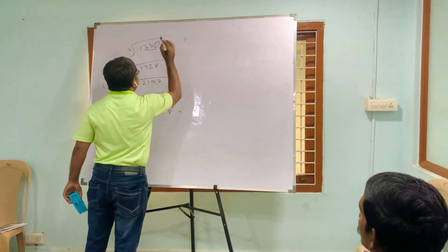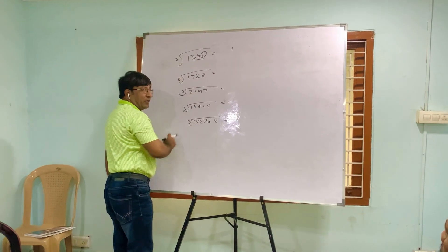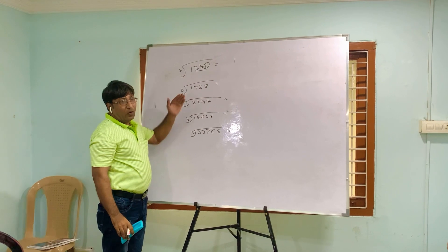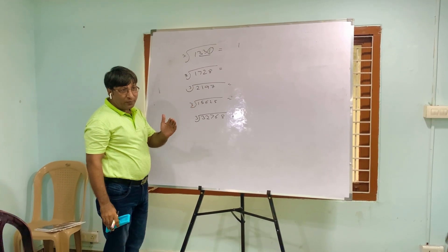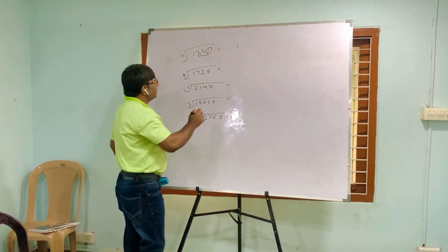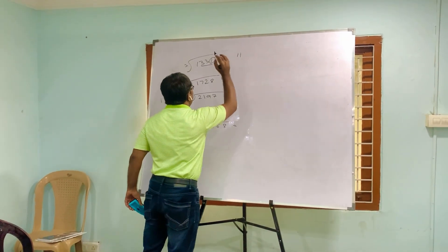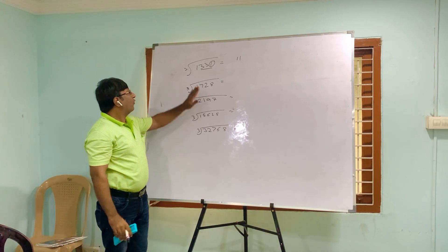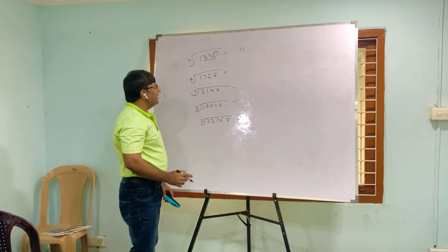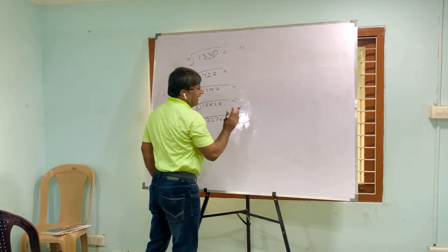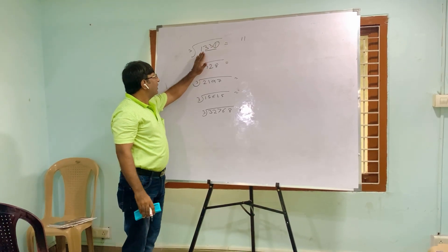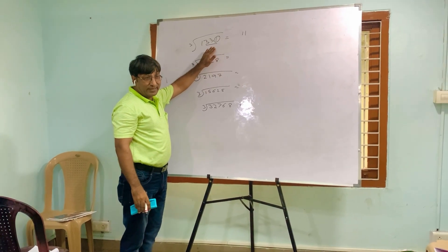Now the left remaining number is 1. Find which number's cube is near to 1. 1³ = 1, and 2³ = 8, which is greater than 1, so take 1. The answer is 11 — that is the cube root of 1331. You can verify: 11 × 11 × 11 = 1331.